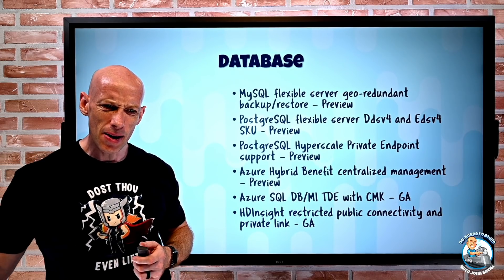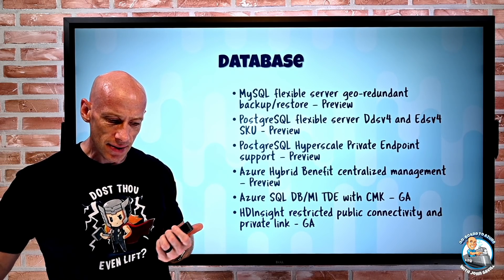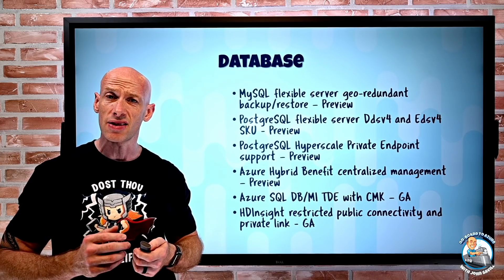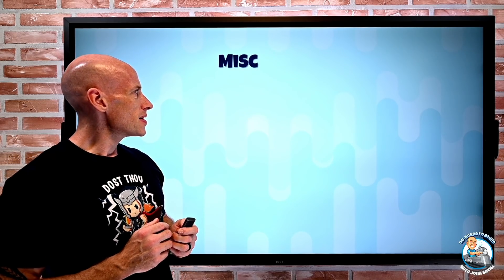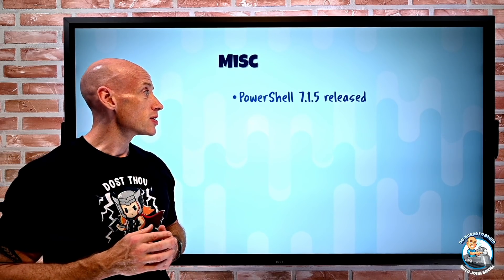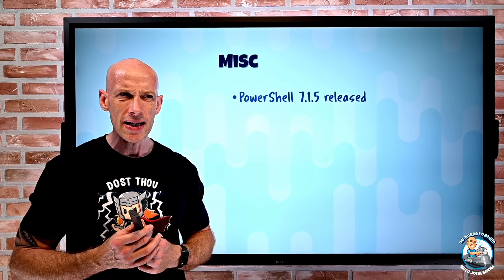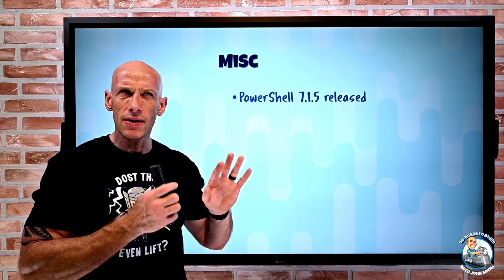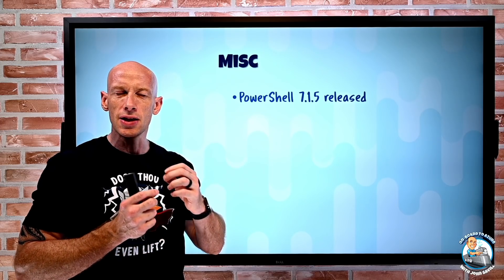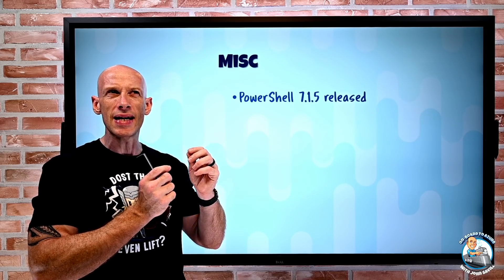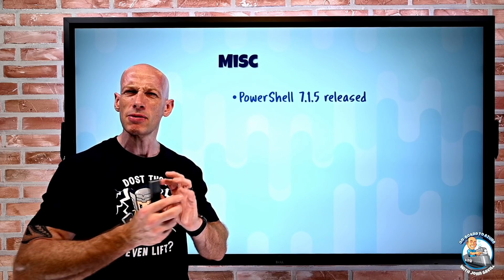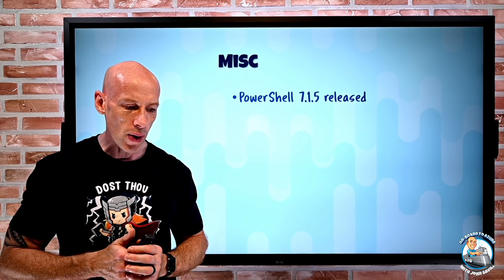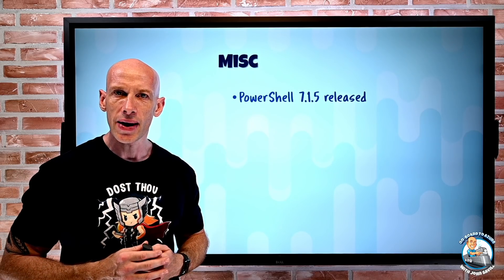There was also an announcement about Synapse — some pre-purchase plans are now available for nice big discounts. On the miscellaneous side, PowerShell 7.1.5 was released. This is a bigger deal than usual — there was a problem in a previous version where telemetry was sending things like server names that it maybe shouldn't have been. This is fixed in 7.1.5, so you'll want to go and get that update.